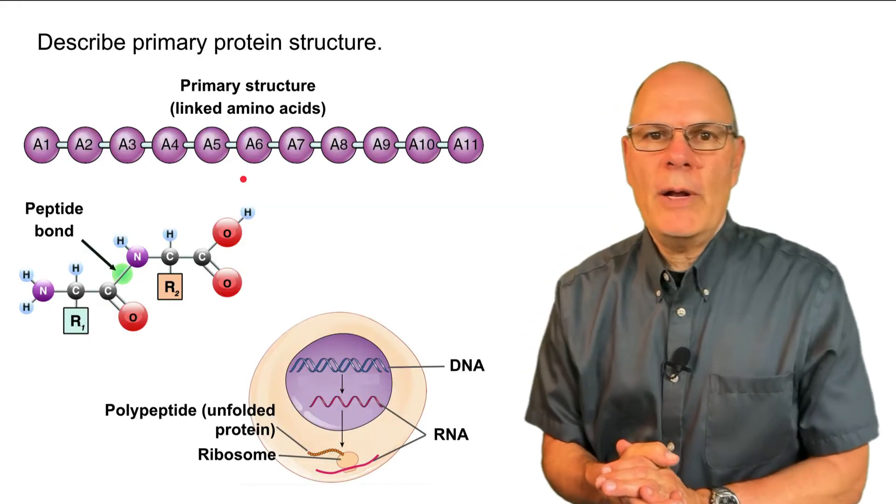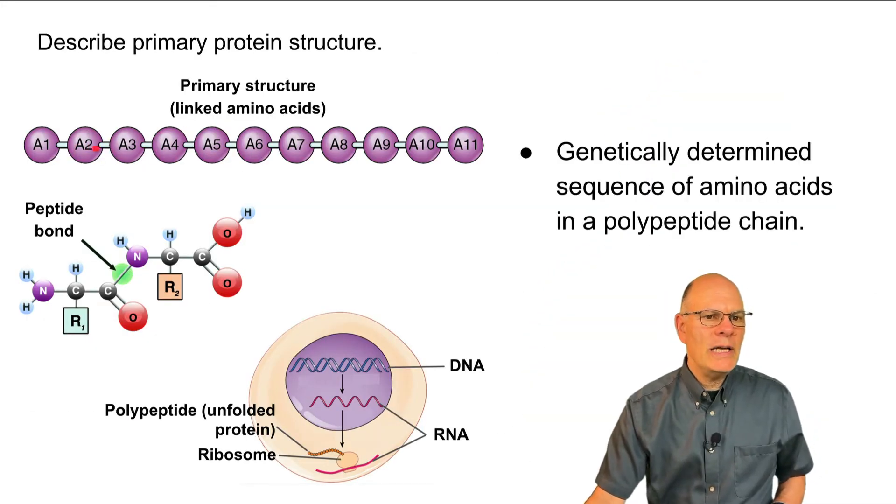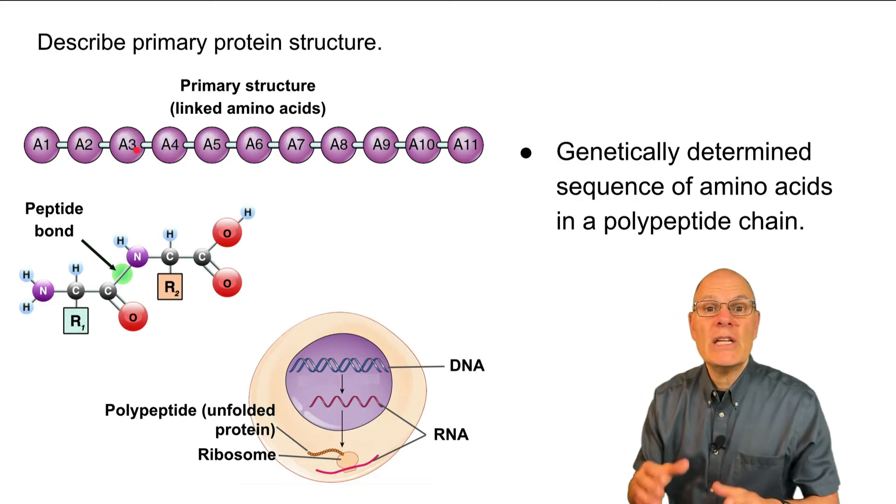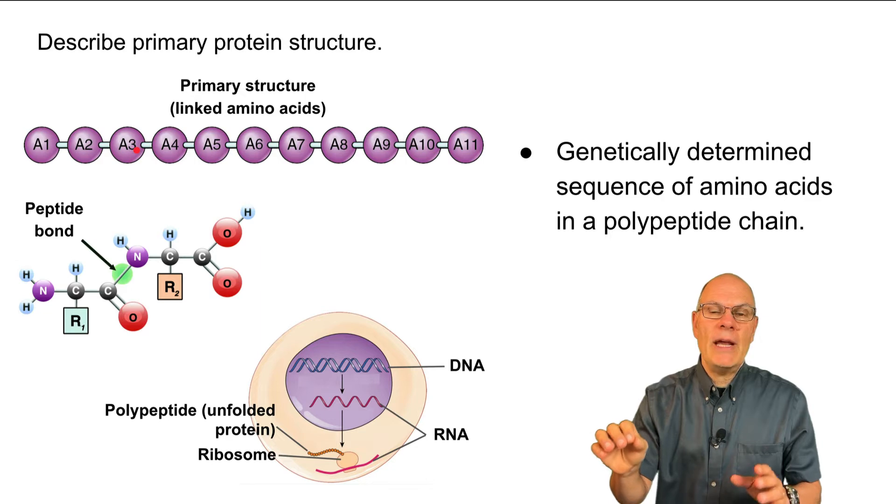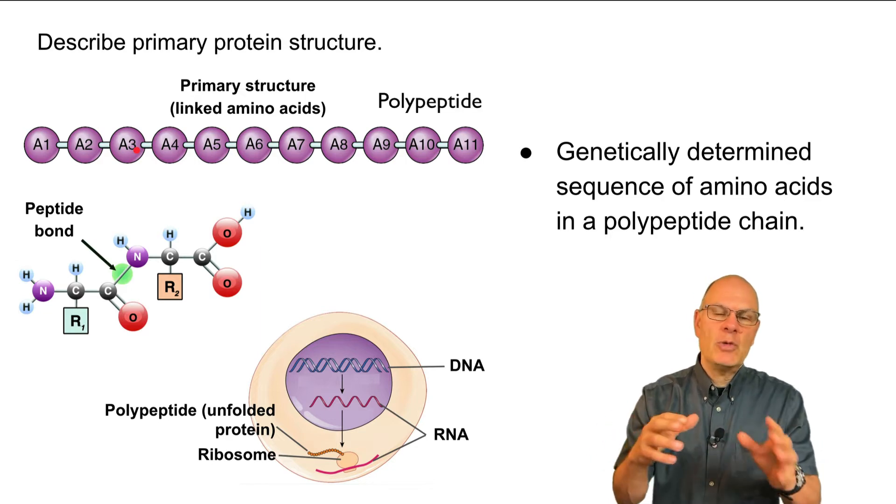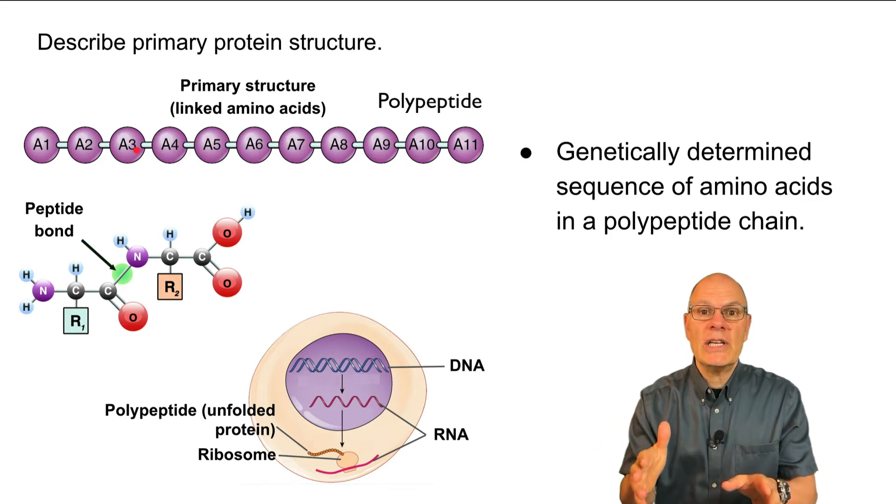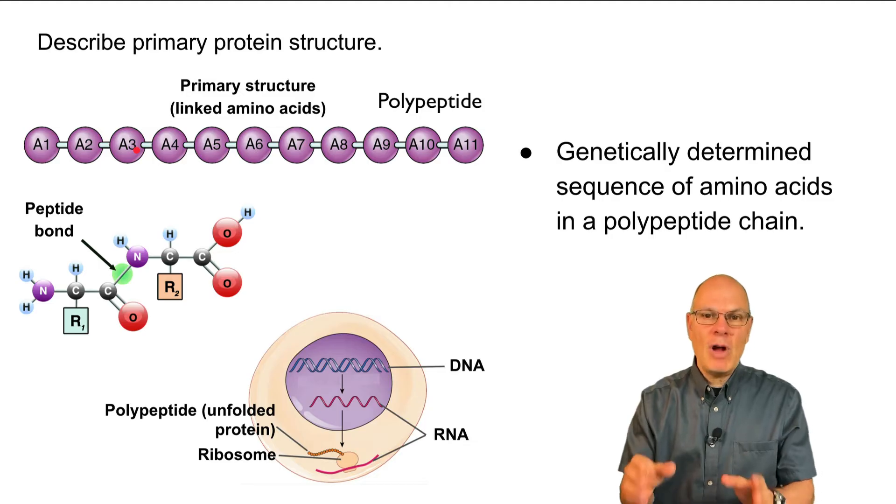Okay, let's talk about primary structure. In this diagram, A1, A2, A3, those all represent different amino acids. So the sequence of amino acids that make up a polypeptide, that's what you call multiple amino acids linked together. That's the primary structure.